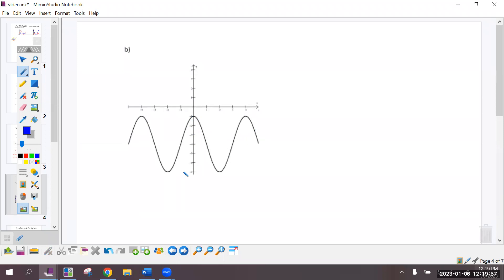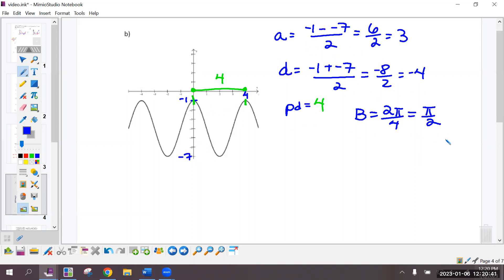This is negative 7, negative 1, and a 4. Maximum minus minimum divided by 2. Midline, maximum plus minimum divided by 2. The period, if the wave starts here and ends here, the length between 0 to 4 is 4. So the B value is 2 pi over 4, which is pi over 2. I'm going to pick cosine again, because the maximum is on the y axis, so I have no horizontal slide, no phase shift.